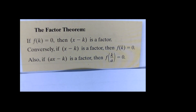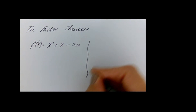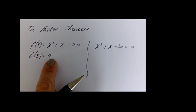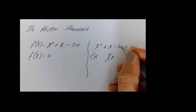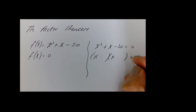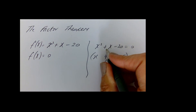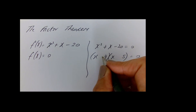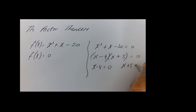Let's take the quadratic x squared plus x minus 20 as our function. Setting f(x) equal to 0, I factorize: factors of minus 20 that give plus 1 when added would be 5 and 4. To get minus 20 when multiplied the signs must be different, so it's minus 4 and plus 5. Either x minus 4 equals 0 or x plus 5 equals 0.